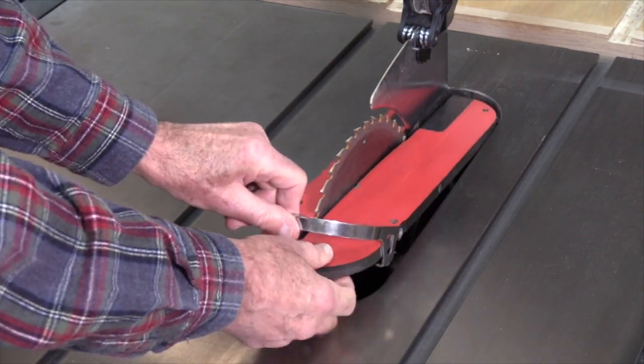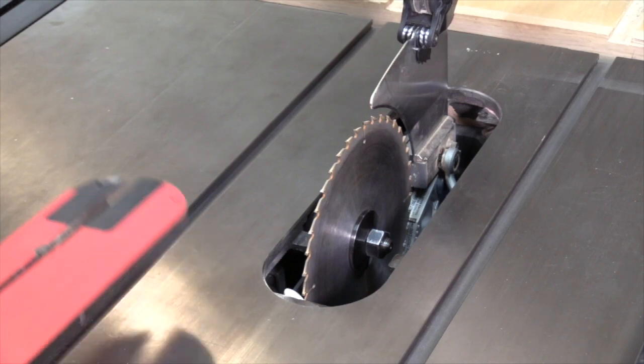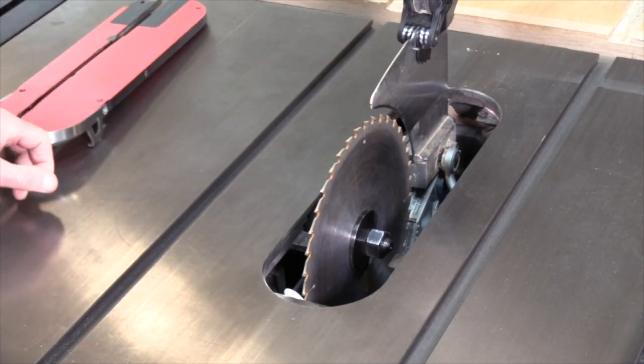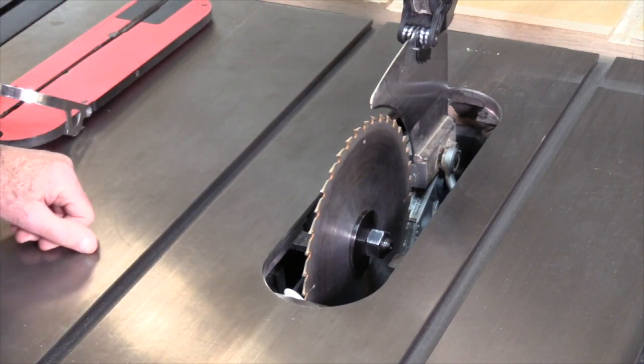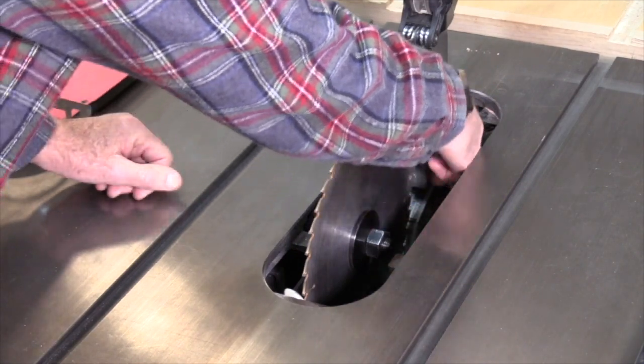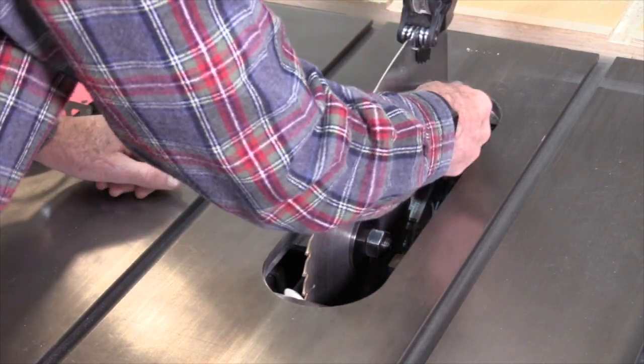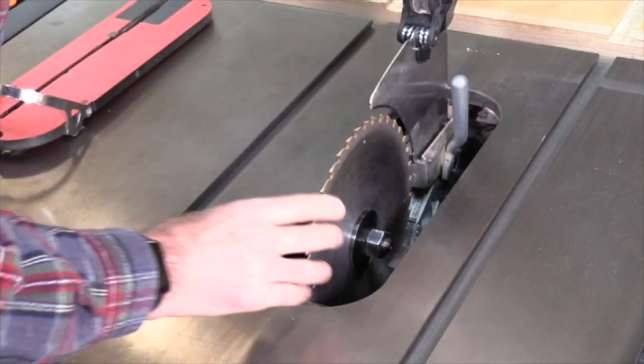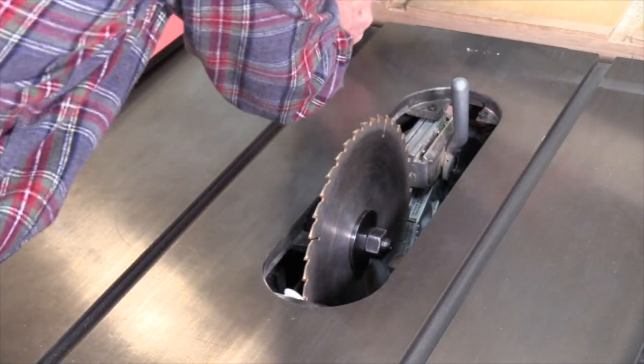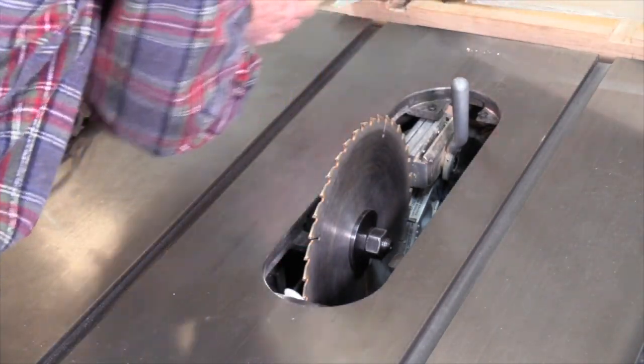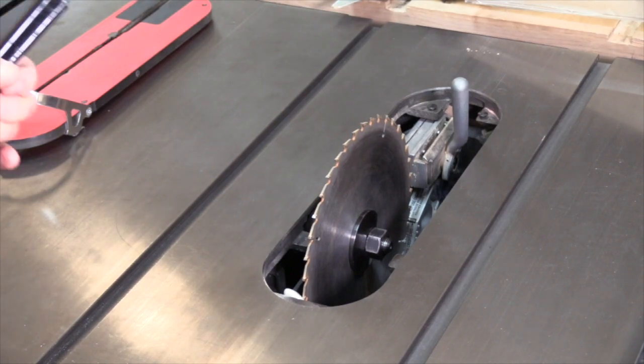And then to remove the guard assembly completely, you have to reach in and raise this gray lever all the way up. Then the guard pops right out.